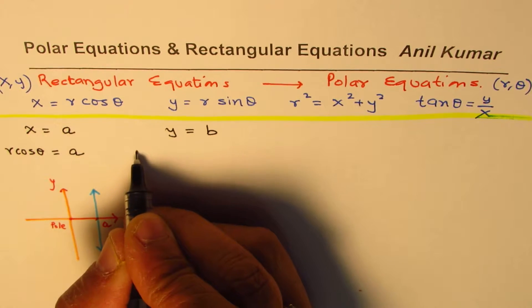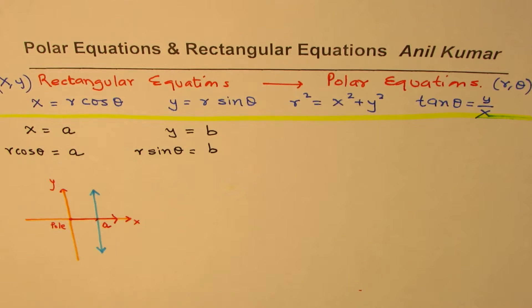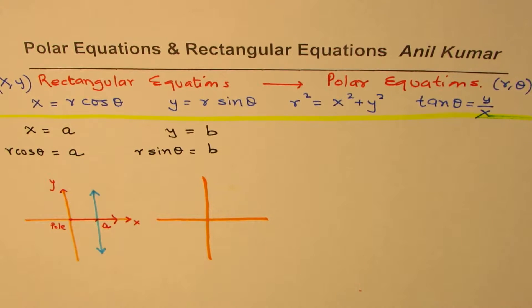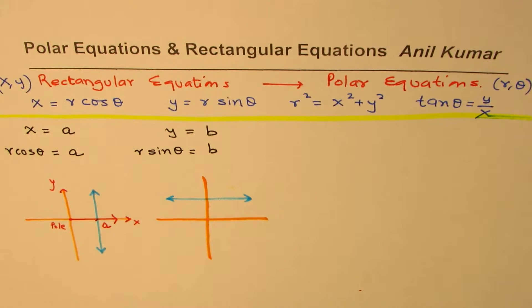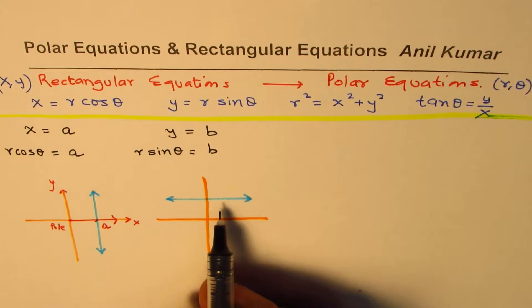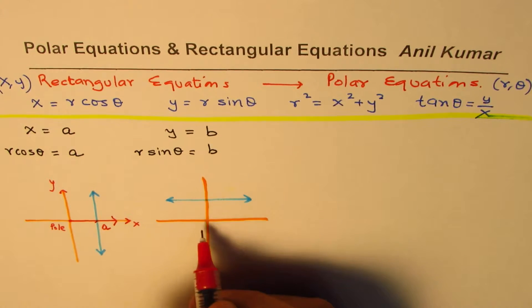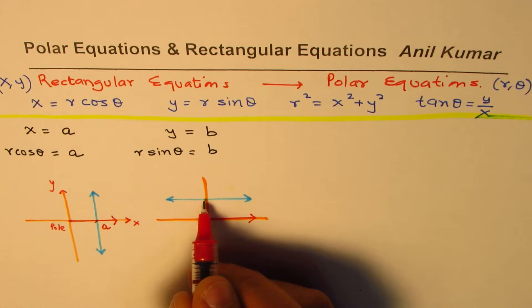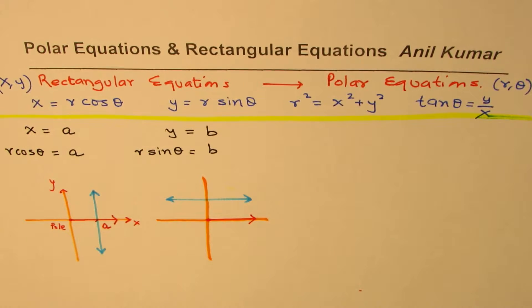Let's take another example: y equals to b. Since y is r sin theta, I replace y with r sin theta, giving r sin theta equals to b. Both of these represent the same thing but in different systems. y equals to b is a horizontal line with y-intercept of b. In the polar system, the equation r sin theta equals b gives that horizontal line. The pole and polar axis are shown, with b units from the axis.